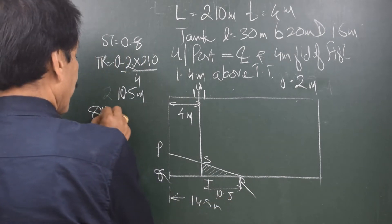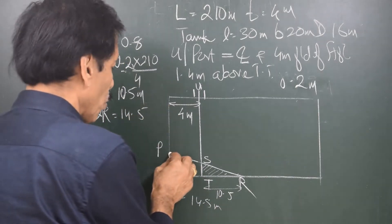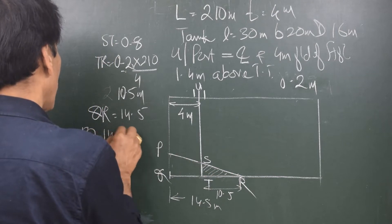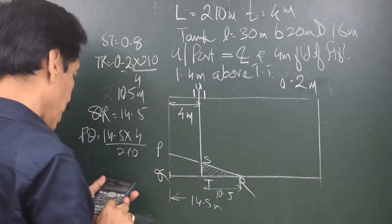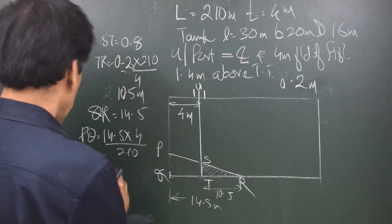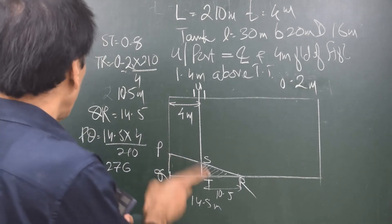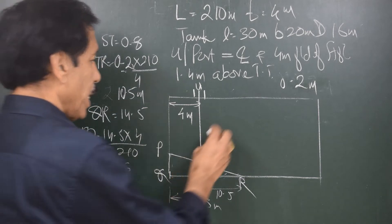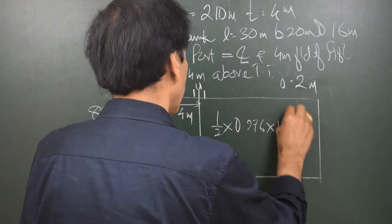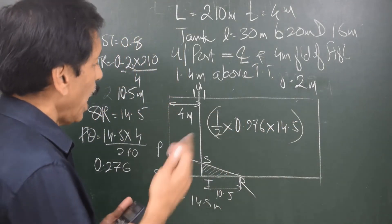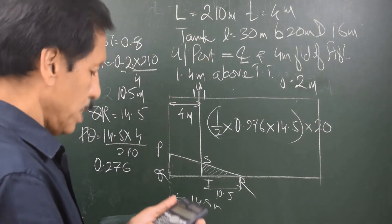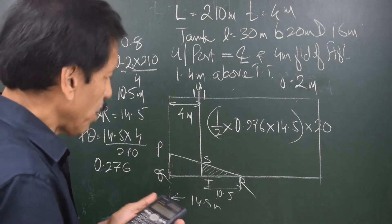So we get QR = 14.5. Now looking at this right angle triangle, we know the longer side and want to find the smaller side: PQ = 14.5 × 4 ÷ 210 = 0.276. So PQ is 0.276 and QR is 14.5. The area of the triangle is ½ × base × height = ½ × 0.276 × 14.5. To find the volume of the wedge, we multiply by the breadth of the tank — 20 meters — giving 40.02 cubic meters.